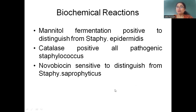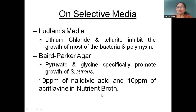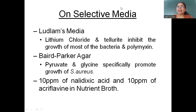You can also grow Staphylococcus aureus selectively in nutrient broth by adding 10 ppm of nalidixic acid and 10 ppm of acriflavine, which also acts as a selective medium. Today I covered culture media and microscopic morphology. In future lectures, we will talk about biochemical reactions, resistance, and pathogenicity of Staphylococcus aureus. Please let me know whether I was able to explain these things properly. Thank you.